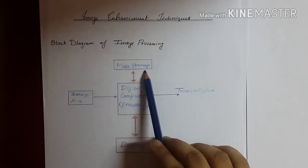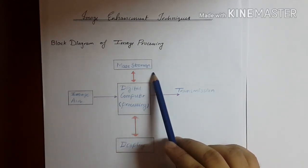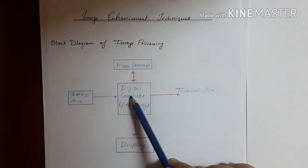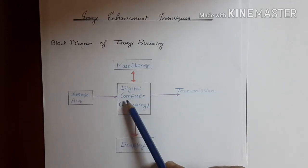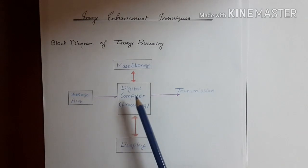Mass storage is more essential nowadays. Digital computer or processing is the heart of the image processing block diagram and the image processing system. The various methods that we are going to see in subsequent tutorials are all under this block, that is processing.